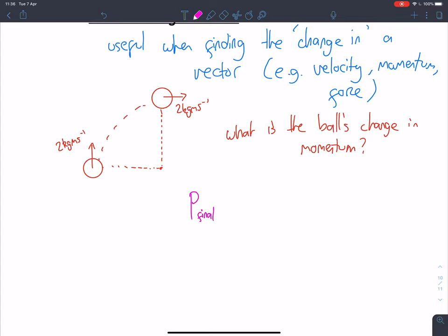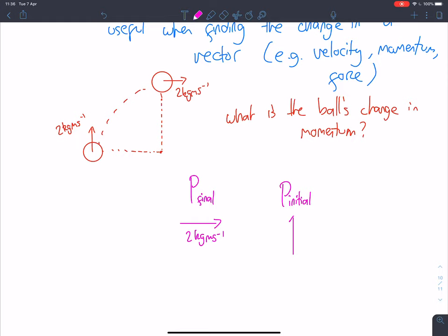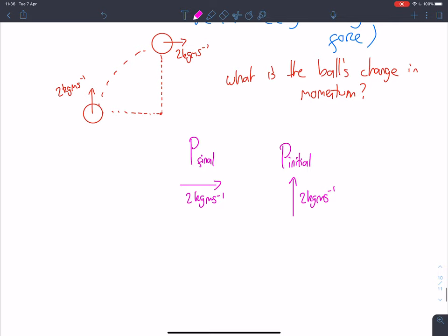What I want us to do is start with my final momentum. In this case, it's this vector here, 2 kilogram metres per second in that direction. My initial momentum is 2 kilogram metres per second in this direction.